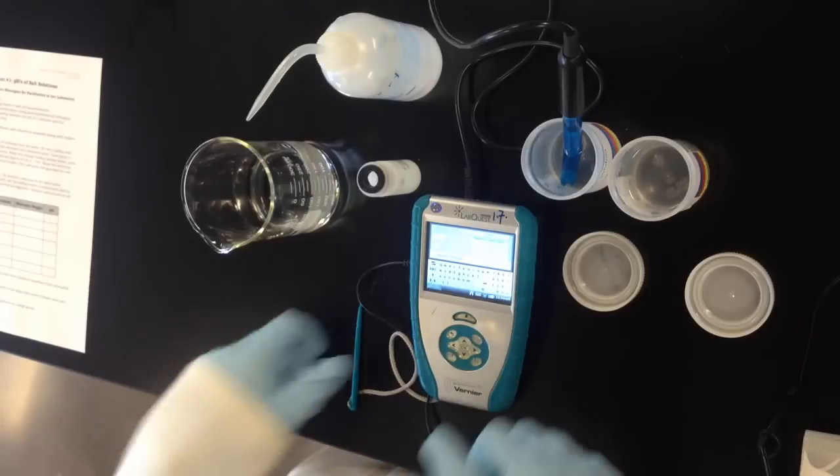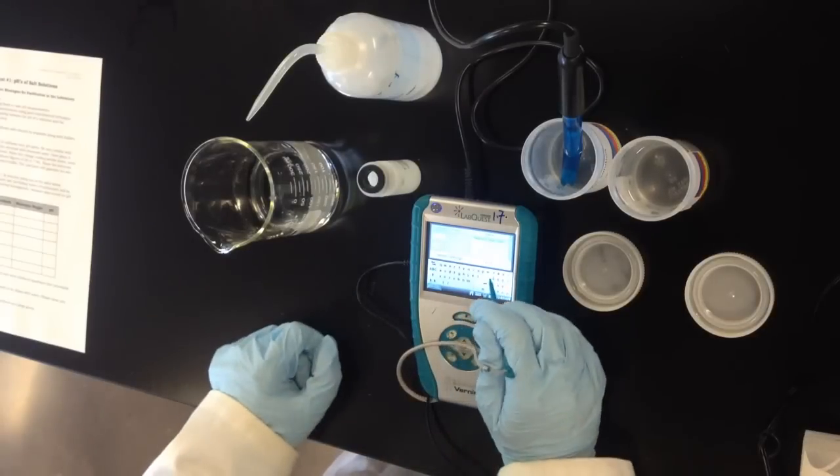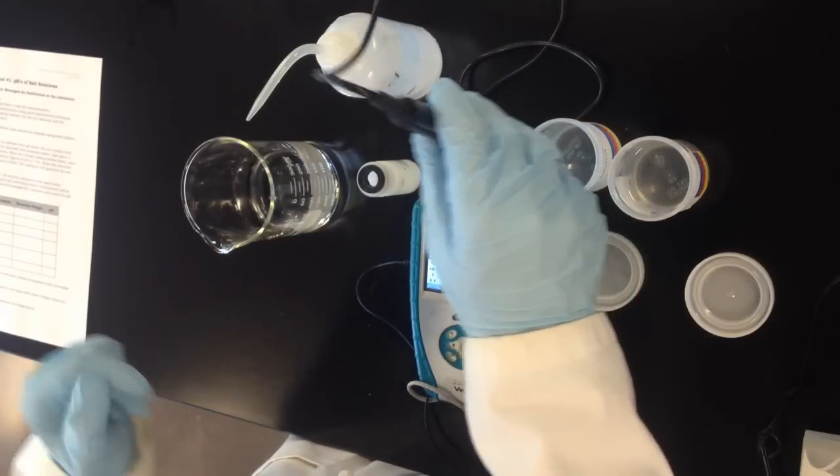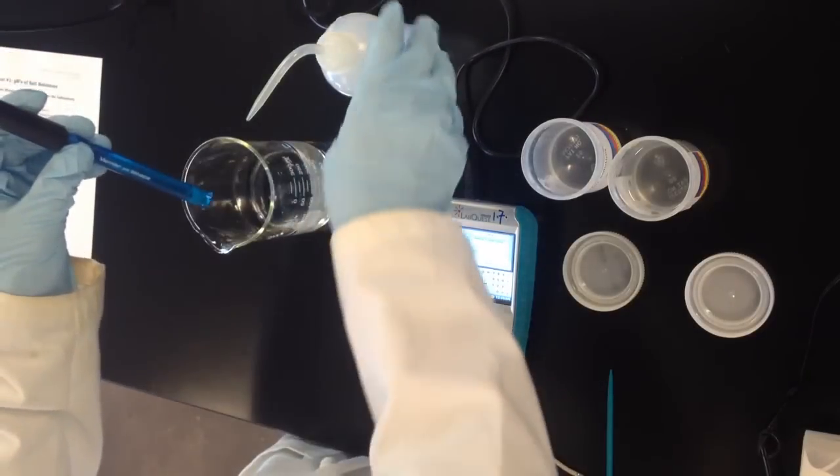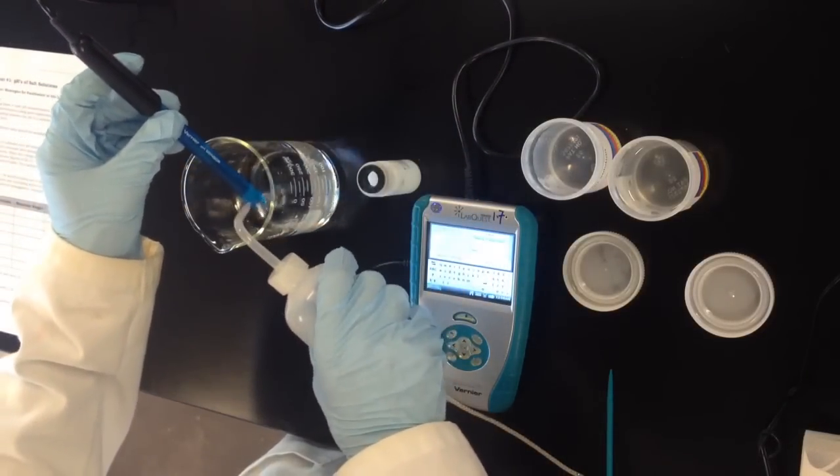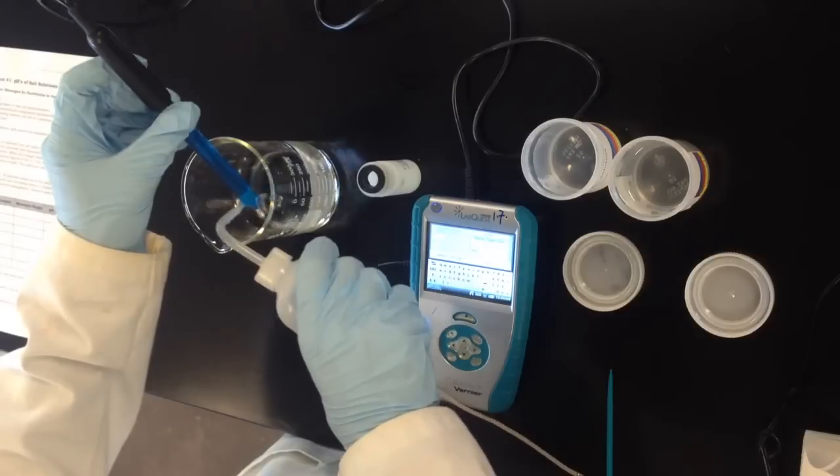So I'm going to put this down and go ahead and type in the reading value here as 7.00. Before I transfer over to the pH 7 buffer, I'm going to wash off the pH electrode back into my distilled water beaker here and this is a wash bottle containing distilled water.